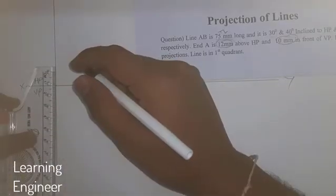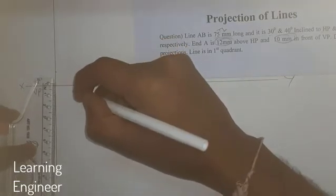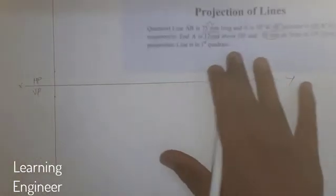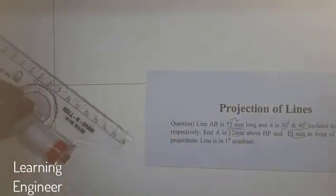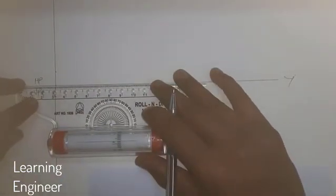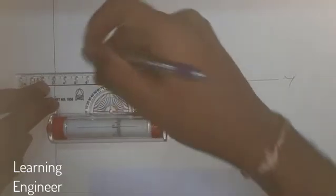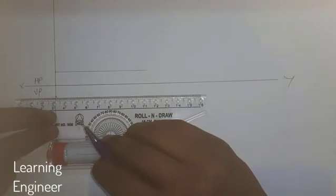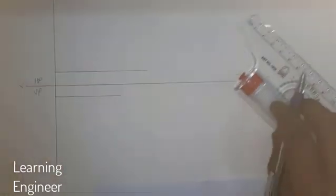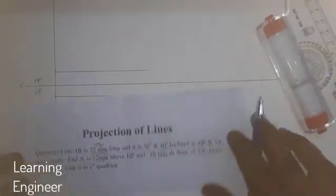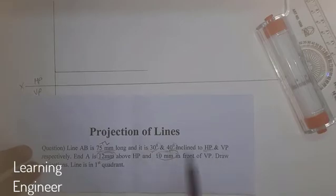From this point we have to mark 12 mm above HP and 10 mm in front of VP — that means 10 mm below the XY line. Now we have been given the angles also: 30 degrees and 40 degrees. For marking the angle, we have to draw the reference line through this particular point, and by using the protractor we will mark 30 degrees and 40 degrees — 30 degrees with respect to HP and 40 degrees with respect to VP.